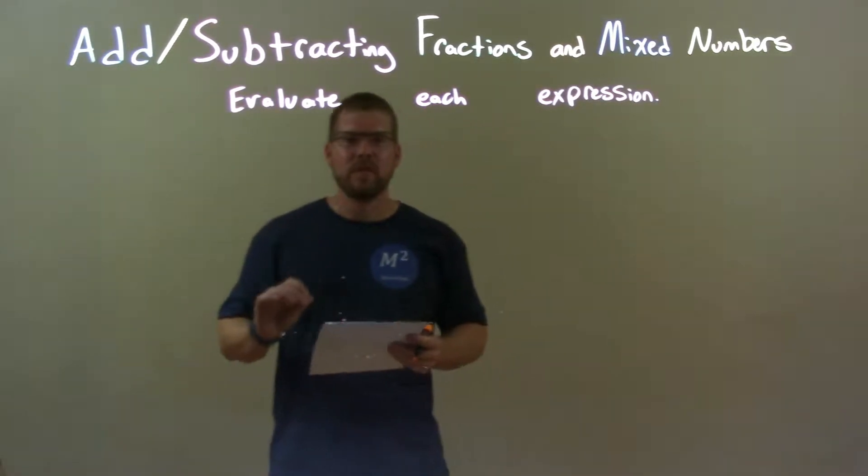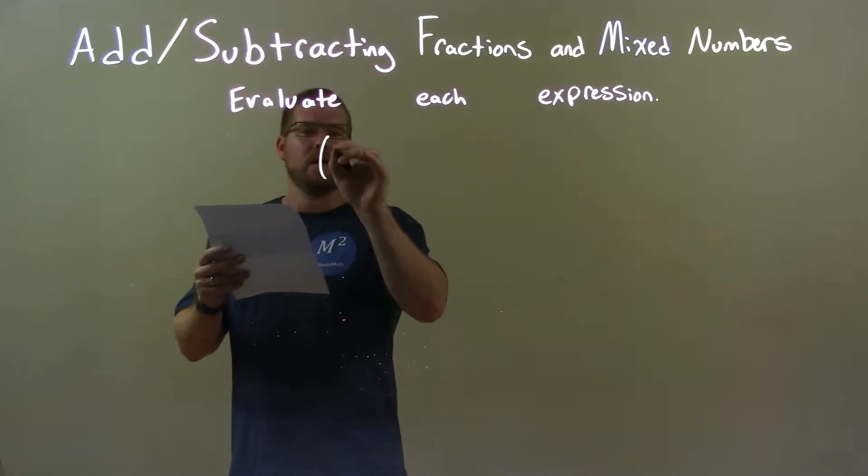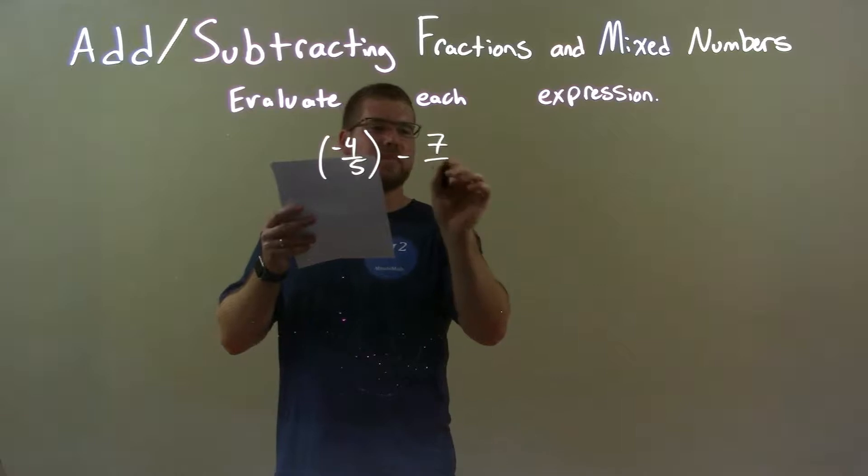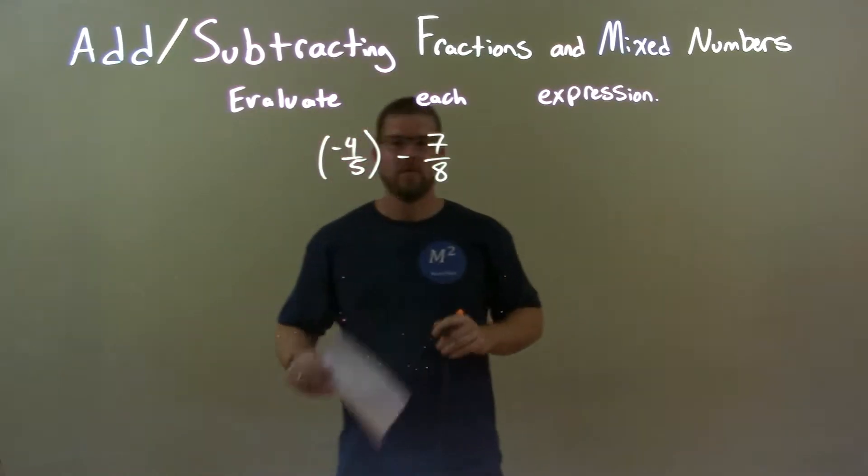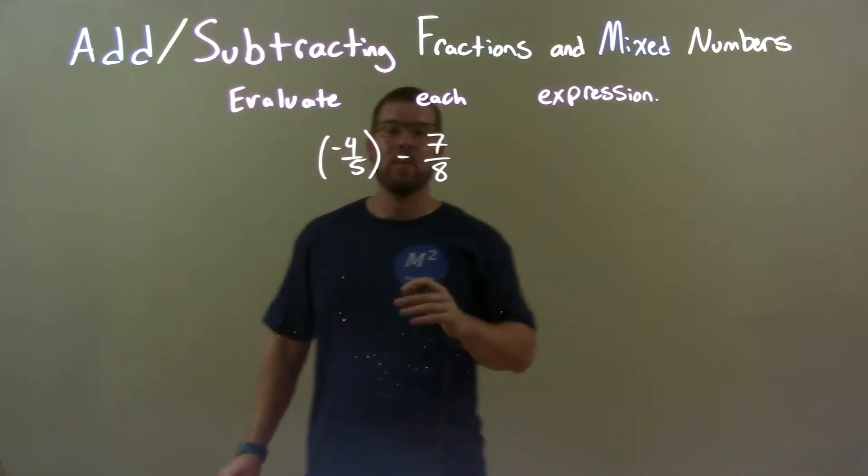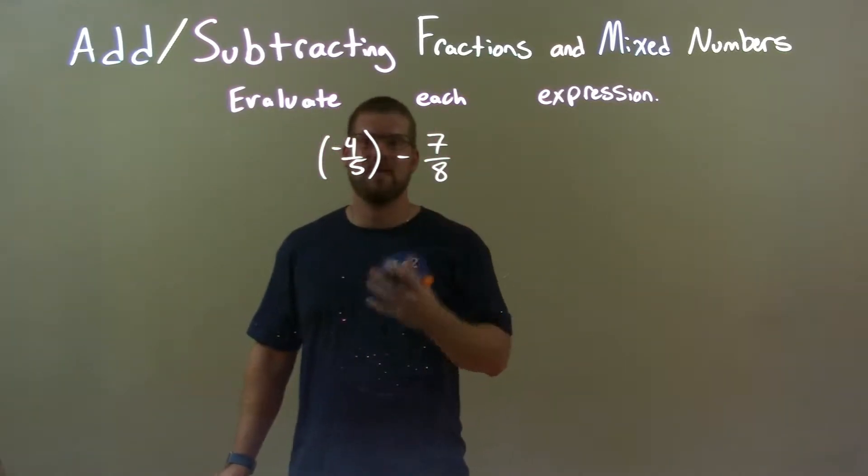So if I was given this expression, negative four-fifths minus seven-eighths. One of the first things we're going to notice here is that these do not have the same base, so we need to convert them to have the same base.